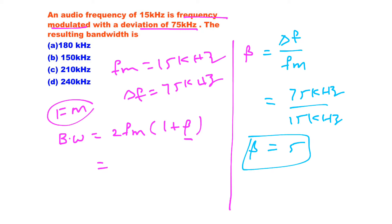So it results 75 kHz divided by 15 kHz, so it results 5. So beta is equal to 5 for the given signal.